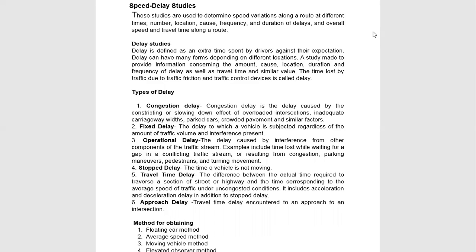Next is Stop Delay. Stop delay is when the vehicle is not moving — the vehicle is stopped. For example, at a red light, the vehicle stops. If there is no other way to operate, traffic jams also contribute. So, these are the types of delays.